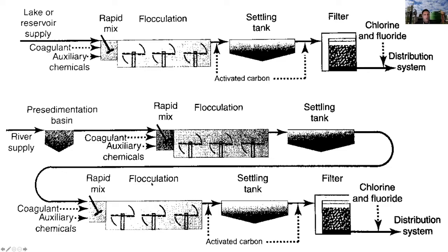Typical water treatment facilities treating surface water consist of the following processes: rapid mix after the addition of coagulant and some auxiliary chemicals, followed by flocculation which involves slower mixing. After the formation of flocs, we have settling and/or filtration to remove those flocs. Finally, we would have chlorination and fluoridation before the water is sent to storage and into the distribution system.